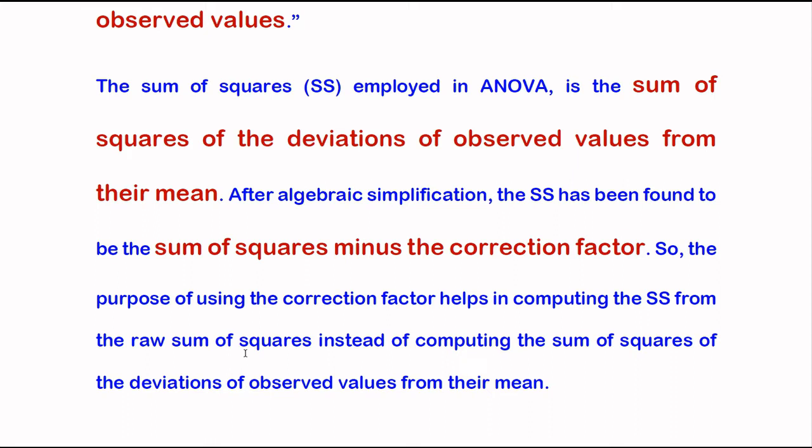Because when we calculate sum of squares, it is the deviation from mean. To convert it into the raw sum of squares, we minus the correction factor. This is the logic behind using the correction factor.